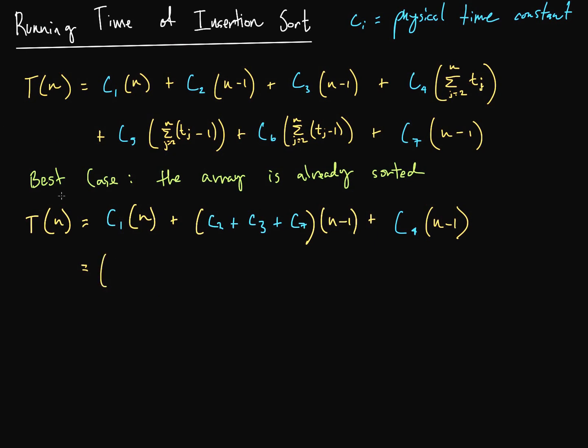And what we end up with is c1, right, plus c2, plus c3, plus, I'm just going to go along the line here, plus c7, plus c4, all times n, plus. And then we're just going to have all of our constants. This is going to be minus c2, minus c3, minus c7, and minus c4. And if you're asking yourself why is that, it's just c2 times minus 1, plus c3 times minus 1, c7 times minus 1, c4 times minus 1. There you go.